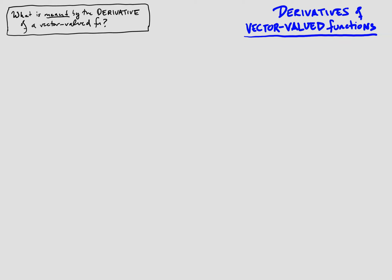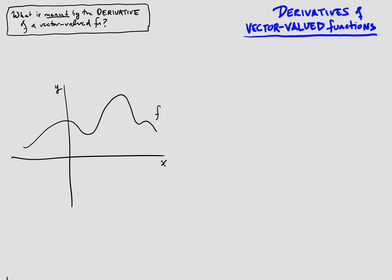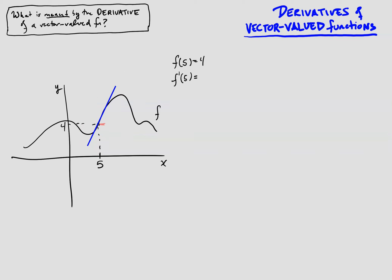To answer this, it helps to go back to the ordinary derivative of real-valued functions from calculus 1. I want to emphasize one particular interpretation that often doesn't get enough play. Let's say at x equals 5, the value of our function is 4, so f(5) = 4. The derivative of f at 5 is the slope of the tangent line right there. Drawing it in, for every unit we go over we go up 2, so the slope is about 2.